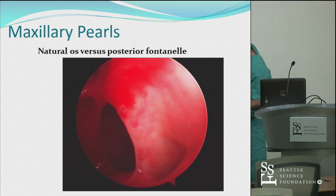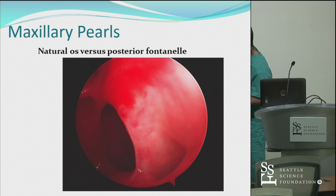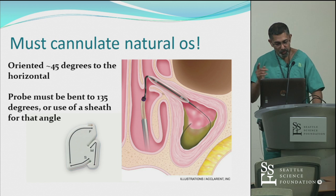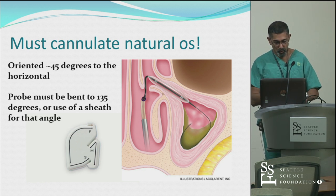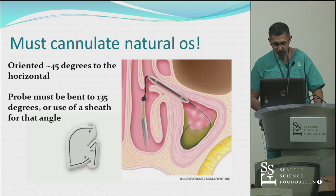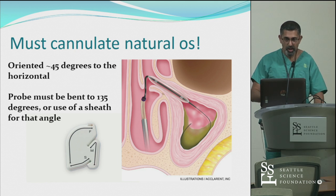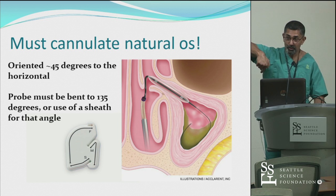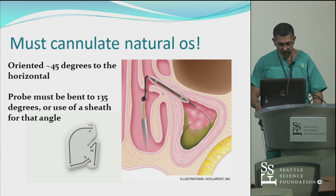Because the infundibulum goes down toward 4 o'clock or 7 o'clock — 5 to 7 o'clock — the natural ostium sits at that 45-degree angle. That's important because when you're doing a balloon, it is critical to use either a sheath introducer or, if you're using a malleable probe, to angulate it to 135 degrees, because that ostium goes down at a 45-degree angle. Maybe we'll be able to illustrate that in a cadaver.